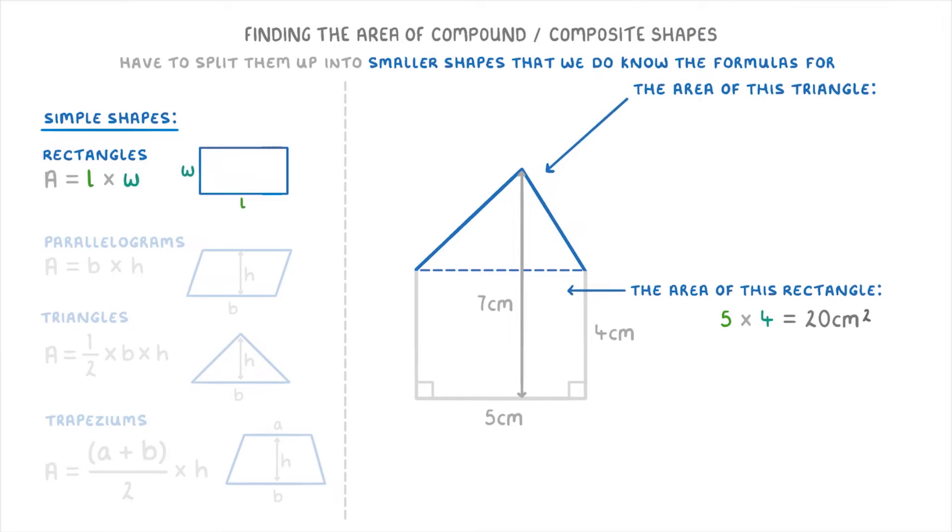Then to find the area of the triangle at the top, we need to use this formula of one half times base times height. The base will just be five centimeters because it's the same length as this base of the overall shape. However, we haven't actually been told the height of the triangle. So we're going to have to work that out for ourselves.